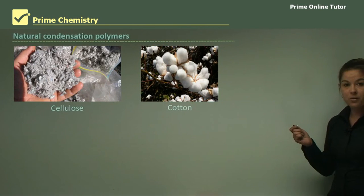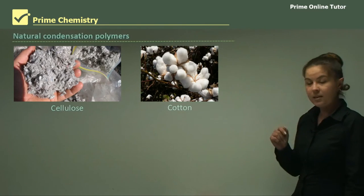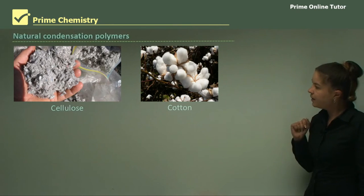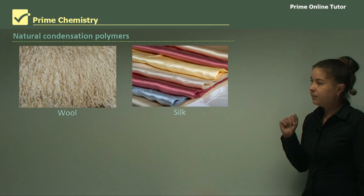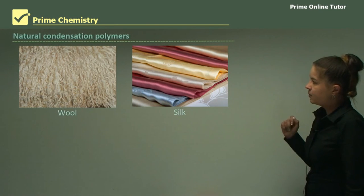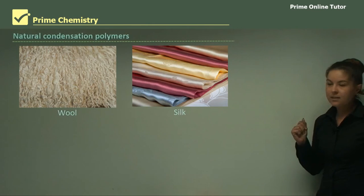Now onto the natural condensation polymers. Some examples: cellulose, which I'm talking about in this lesson. So I'll just go over a few others. Cotton, grown on little bushes there. Wool, from animals. And silk, from silkworms. So they're some natural types of condensation polymers. Let's continue with cellulose.